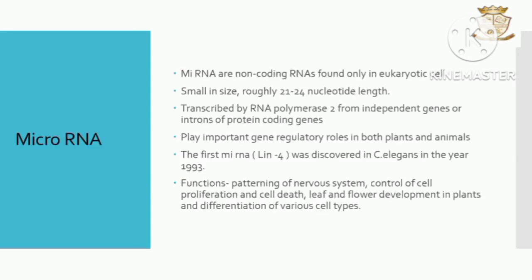Moving to the next topic: MicroRNA. MicroRNAs are non-coding RNAs found only in eukaryotic cells. They are small in size, roughly 21 to 24 nucleotides in length. They are transcribed by RNA polymerase II from independent genes or introns of protein-coding genes. They play an important gene regulatory role in both plants and animals.